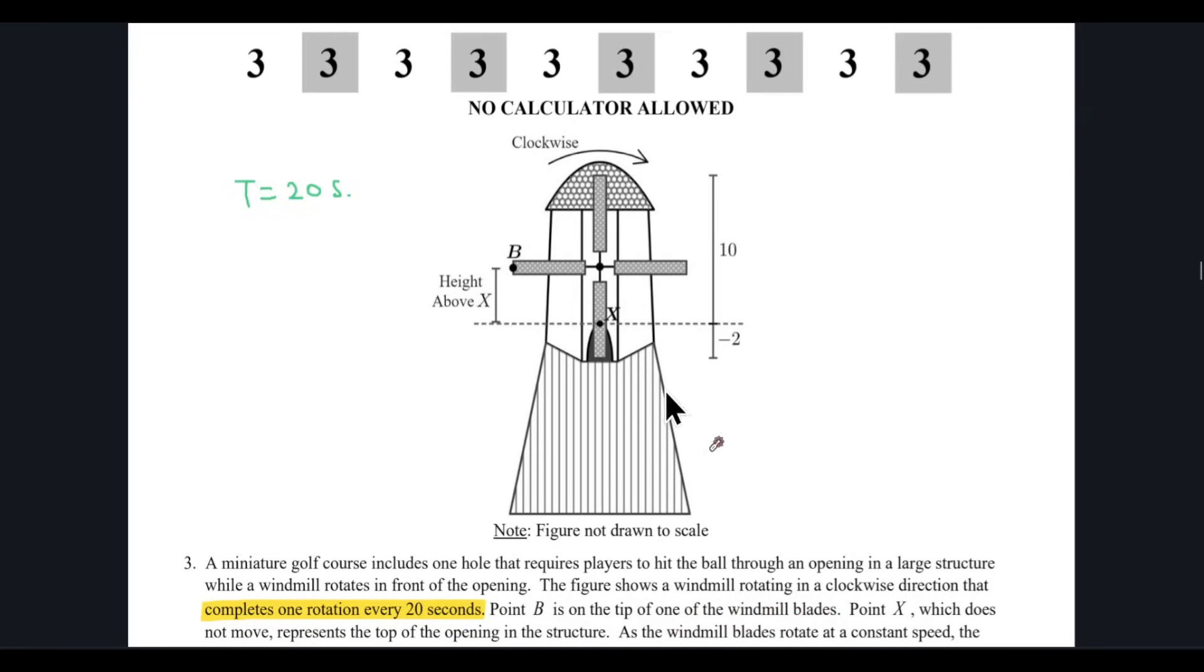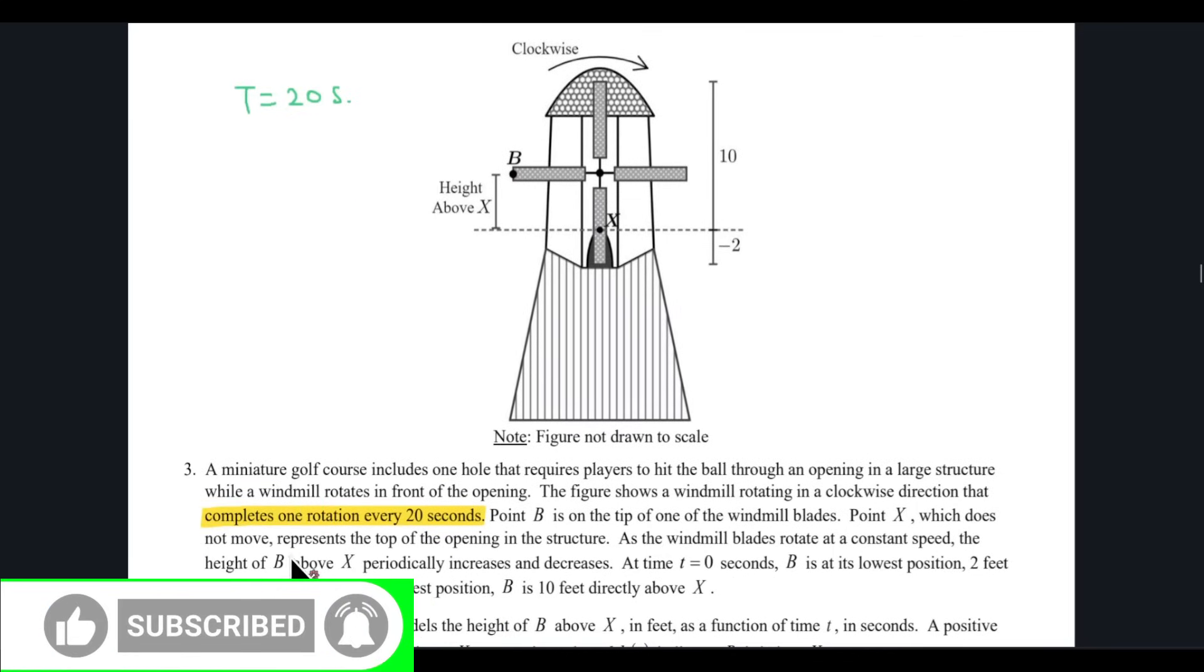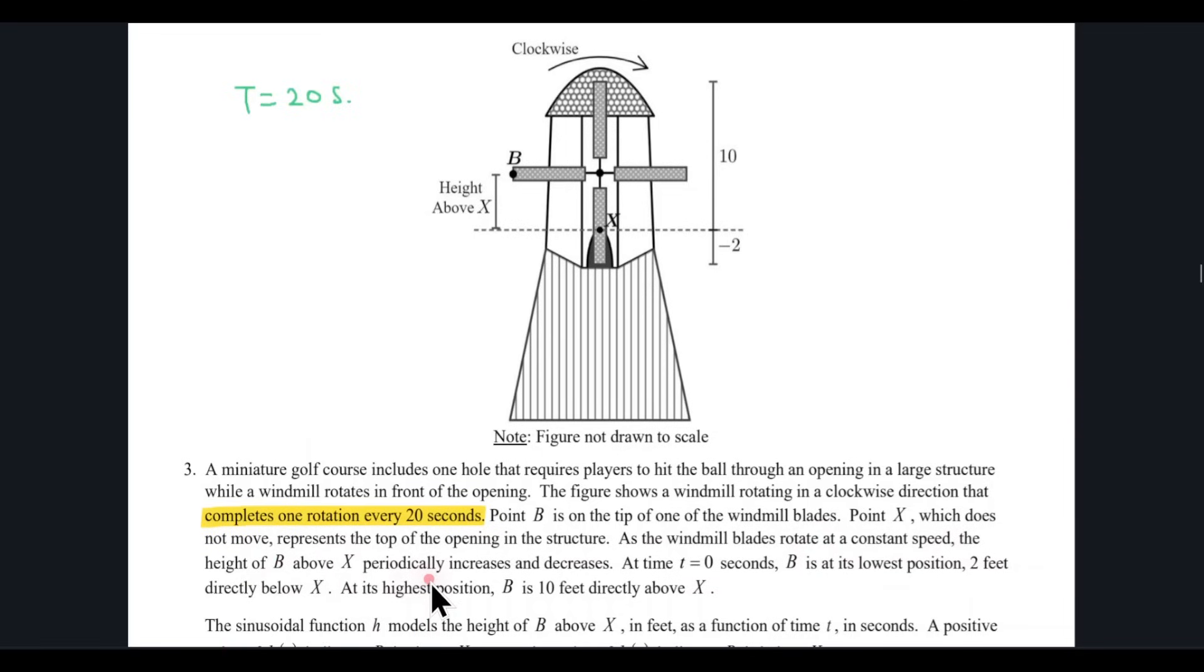Point B is on the tip of one of the windmill blades, so B is on the tip. And the height above x is basically the height of the point B. Now point x which does not rotate, does not move, represents that. As the blade rotates with a constant speed, the height of B above x periodically increases and decreases.